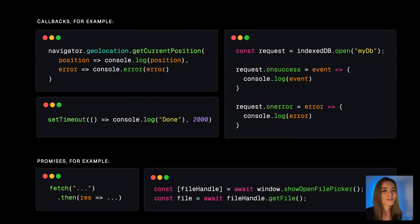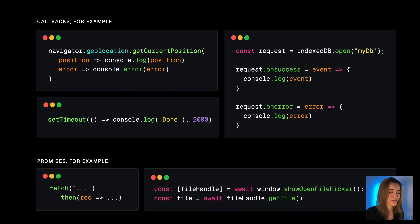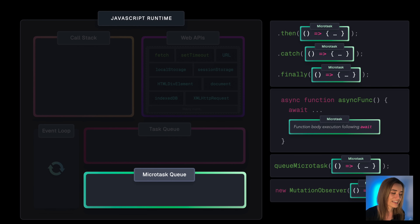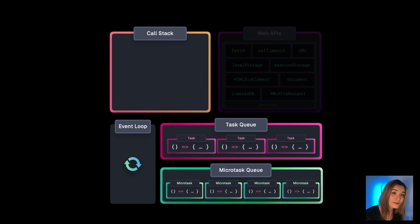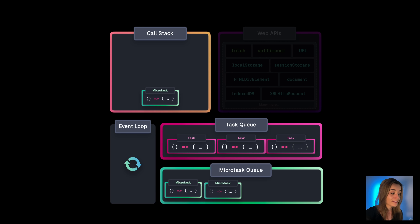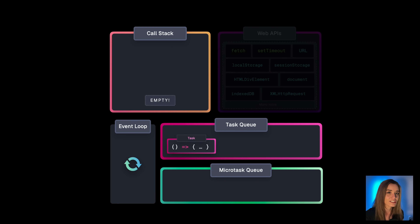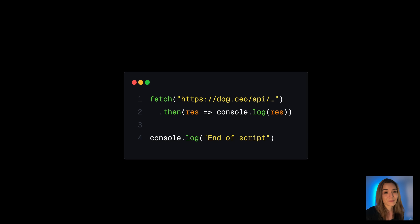Long story short, callbacks provided by web APIs are pushed onto the task queue when the asynchronous task completes. What about promise-based APIs? Whenever we work with promises, we're working with the microtask queue — a special queue dedicated to then/catch/finally callbacks, function body execution after an await, the queueMicrotask callback, and the MutationObserver callback. However, the event loop prioritizes the microtask queue: whenever the call stack is empty, it first ensures the microtask queue is entirely empty, then moves to the task queue. After each task in the task queue, it again checks the microtask queue.